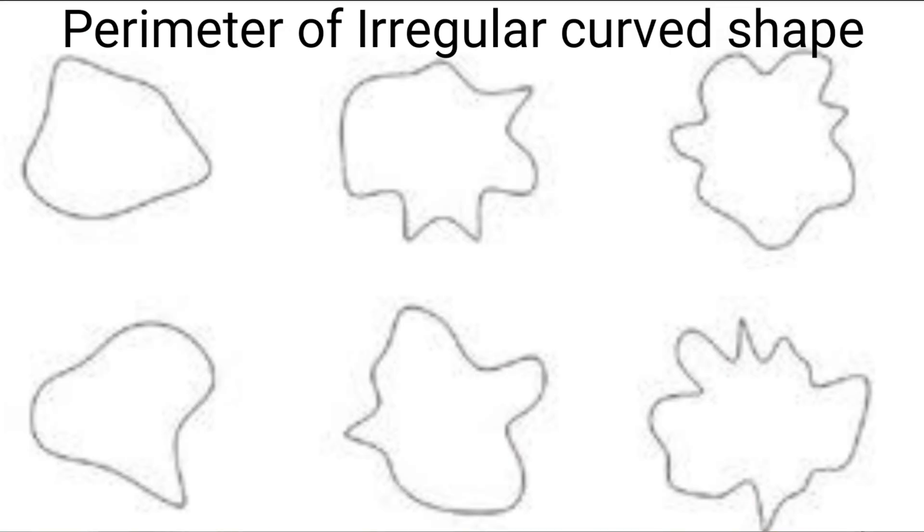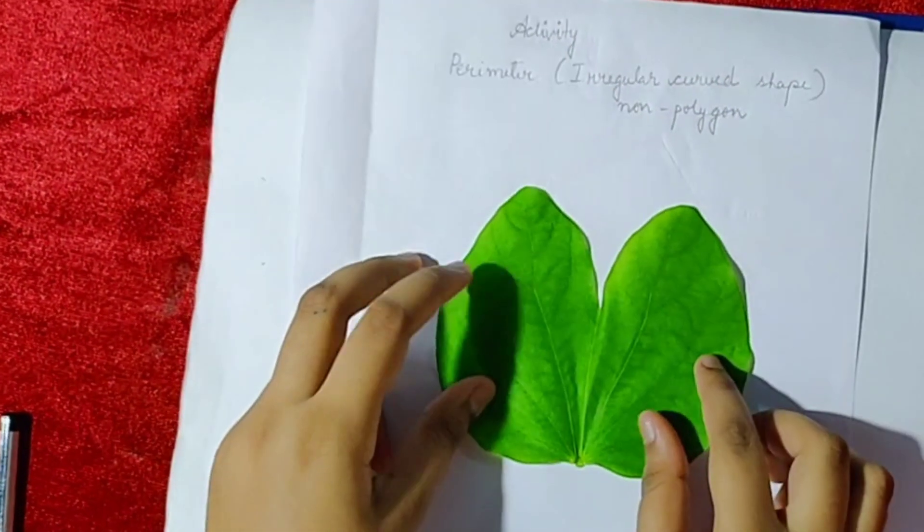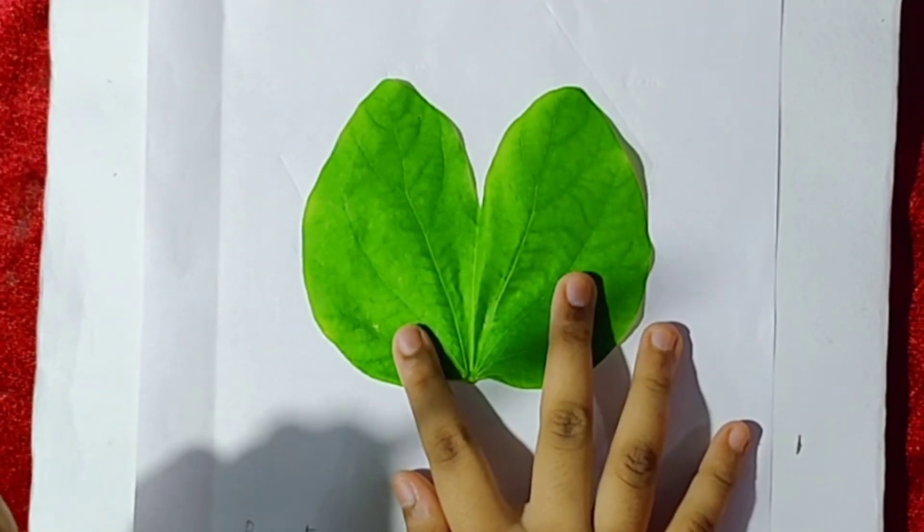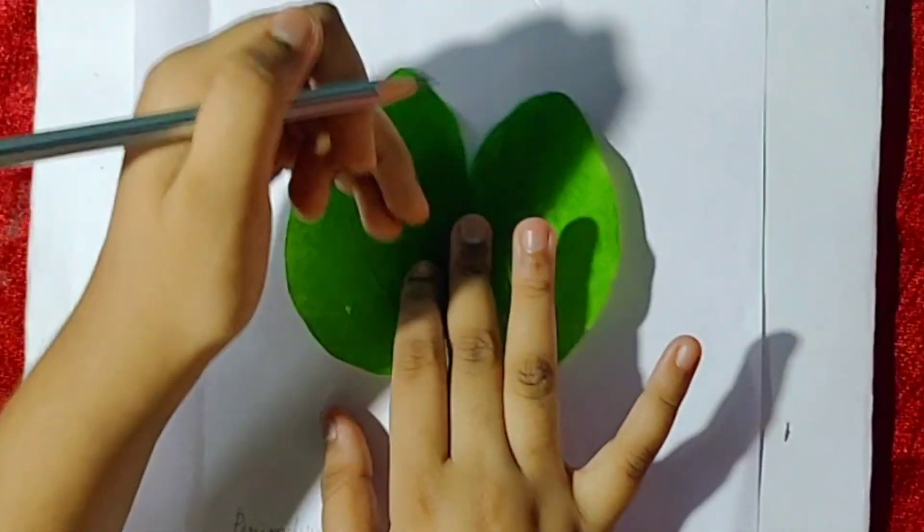We all know what is perimeter - length of the boundary. This is an activity to find the perimeter of irregular curved shapes, non-polygons. For example, a leaf. Now let us find the perimeter of this leaf. We have to draw the outline of this leaf.